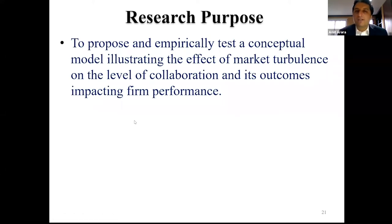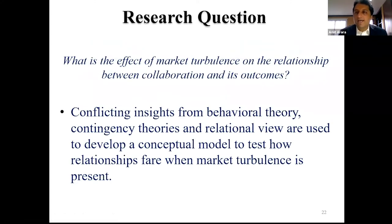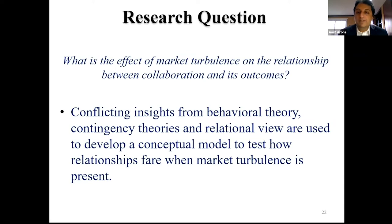The purpose of this research is to propose and empirically test a model illustrating the effect of market turbulence on supply chain collaboration levels between partner firms and its outcomes — in terms of relational outcomes and operational outcomes — which ultimately impact firm performance. The specific research question is: what is the effect of market turbulence on the relationship between supply chain collaboration and its outcomes? To answer this, we draw on three theories: behavioral theory, contingency theory, and the relational view.